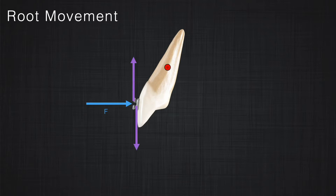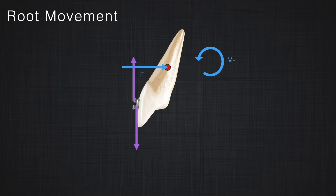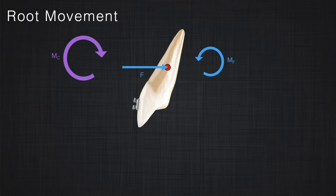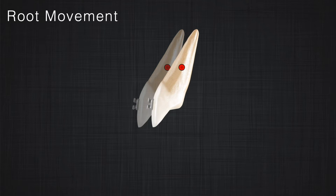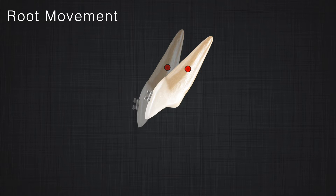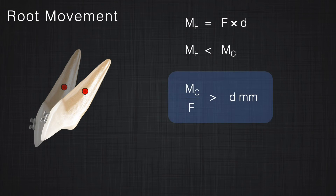What would happen if I apply a larger couple in the system? In that case, the moment produced by the couple is greater than the moment the force produces. In the equivalent system, the force transfers to the center of resistance, the moment of the force remains the same, but the moment produced by the couple is in the opposite direction and much bigger. The resultant is a small clockwise moment remaining in the system. The force produces the same displacement, but the moment rotates the tooth so that the crown does not move while the apex moves — this is root movement. Therefore, for root movement, the couple to force ratio is greater than d.